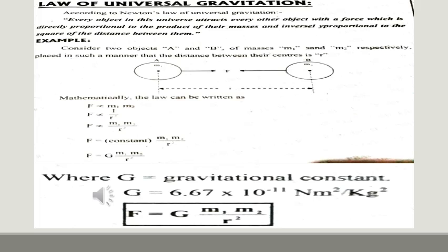We can write this law as: force of attraction is directly proportional to the product of their masses. Body A has mass M1 and body B has mass M2, so M1 into M2 is the product of masses. Directly proportional means that if mass increases, force of attraction also increases — if one quantity increases, the other also increases.